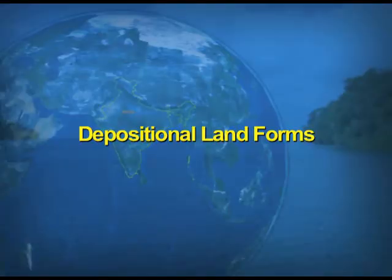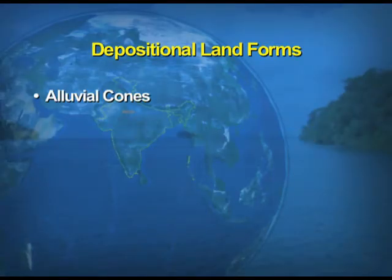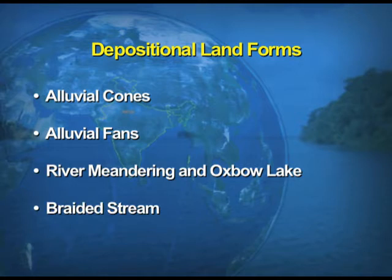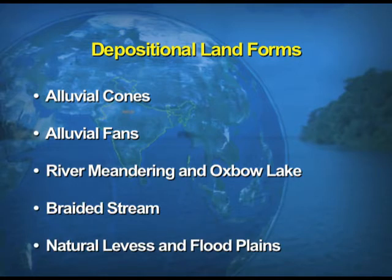After the features formed by the erosional action of the river, we take up the landforms formed by the depositional action of the river. Such landforms are alluvial cones, alluvial fans, river meanders, oxbow lakes, braided channels, and natural levees on the flood plains.